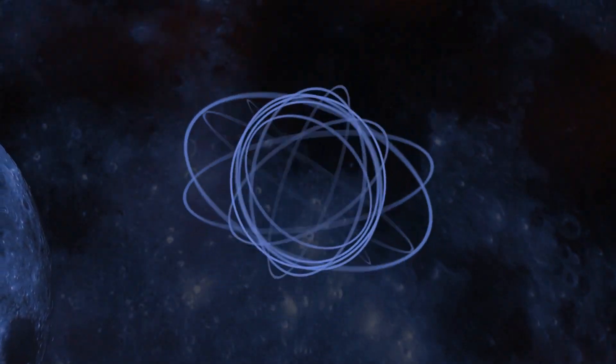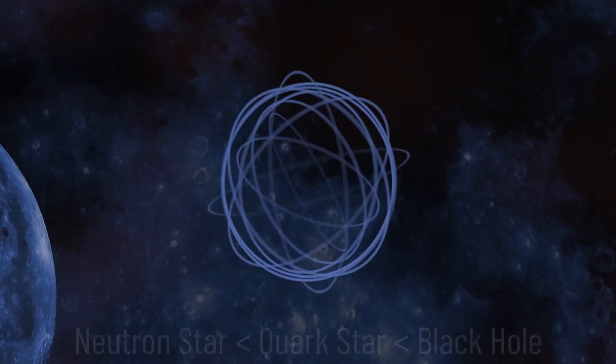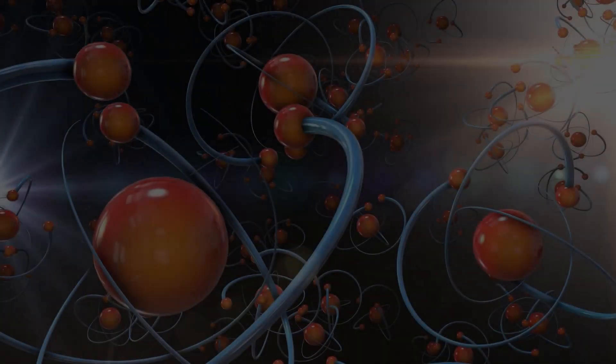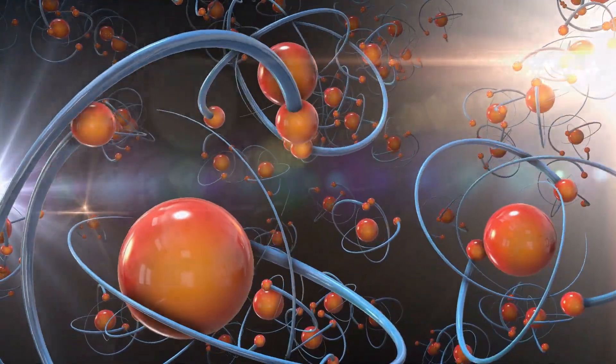Quark stars are thought to arise under very specific conditions. One in particular is that they have a mass just right that much lighter they would have formed a neutron star, and much heavier they would collapse into a black hole. Now let's talk about the key forces at play in each of these objects, which is really where things get bizarre in quark stars.